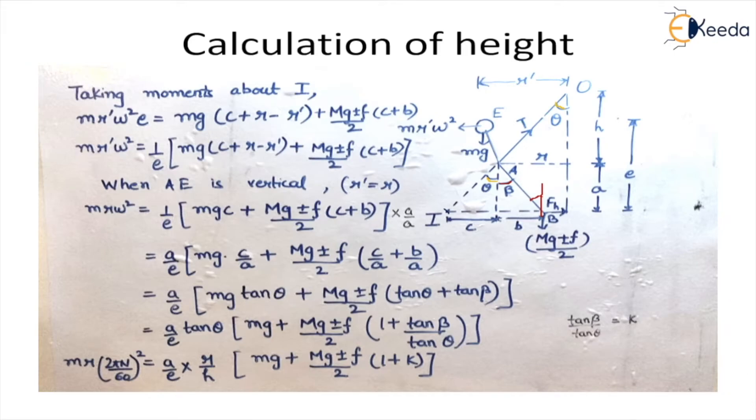When load is moving downward frictional force acts upward in the upward direction. So force becomes Mg minus F. And this we are taking by 2 because we are taking half part of the governor. So the mass of the dead load also becomes the half.